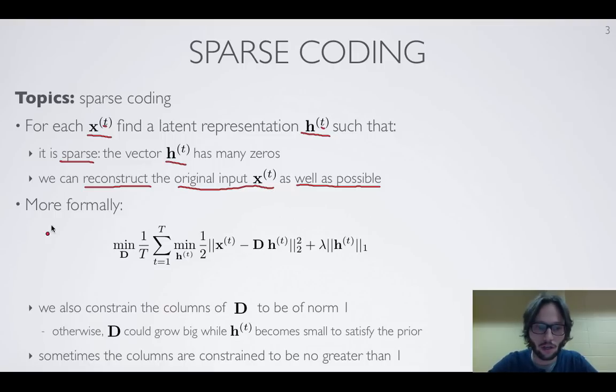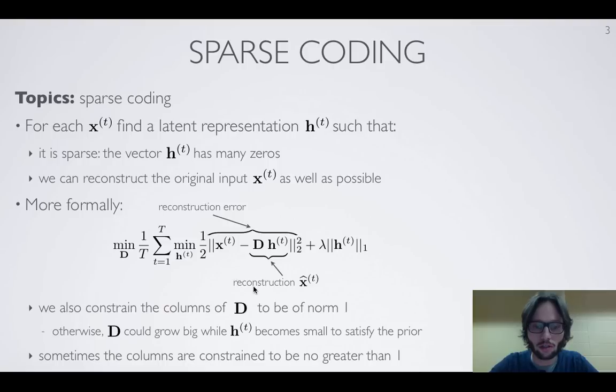First, we want to be able to reconstruct the original data as well as possible. So we'll enforce x(t) to be close to a reconstruction, which is going to be my latent representation times a matrix of weights.